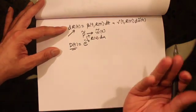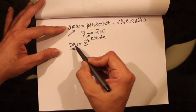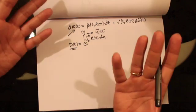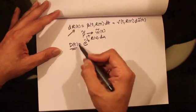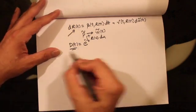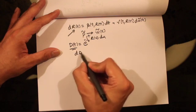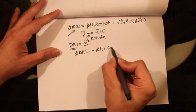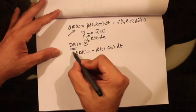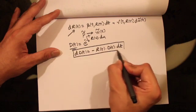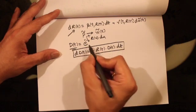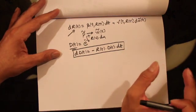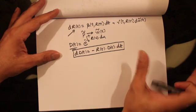D(t) is the present value of a dollar to be received at time t — it gives us the discount factor. Taking the differential, dD(t) equals minus r(t)dt times D(t). We've seen this many times before. Now what we want to do is find the price of a zero coupon bond.